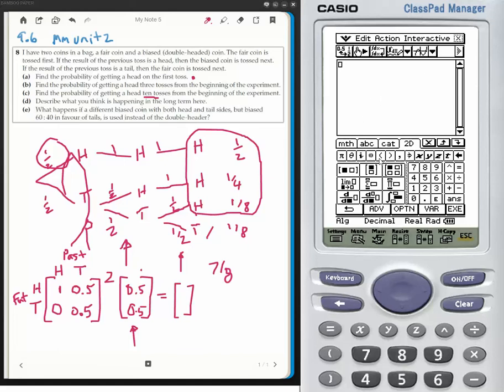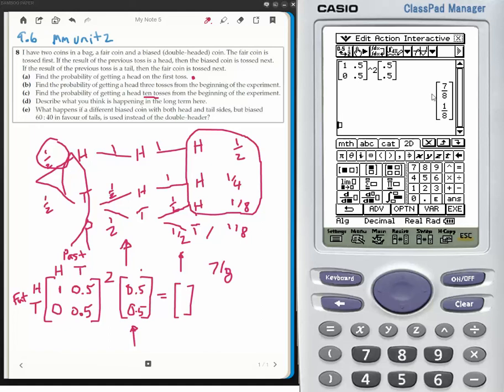So I'm going to go over to my calculator, and I'm going to put in my transitional matrix values of 1, 0, 0.5, 0.5 to the power of 2, and then I'm going to multiply by my initial state, which is 0.5, 0.5, because I know that I tossed my fair coin first. Execute, and that is going to be 7 eighths, which is what I had as being my answer from my diagram.